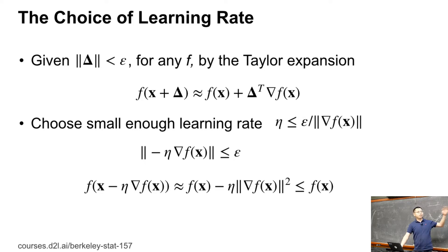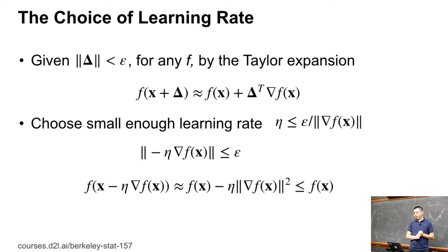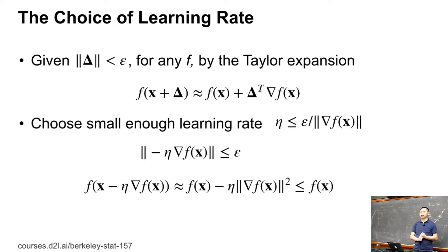Under the condition of epsilon, we can choose a small enough learning rate delta less than epsilon divided by the norm of the gradient. Then we know that the learning rate times the gradient is less than epsilon. The new updated value x minus learning-rate times gradient satisfies f(x - η∇f) ≈ f(x) minus delta times the norm of the gradient, which is less than f(x). If the gradient is not zero, we are making progress. If we choose small enough eta, but if we're already at a local minimum, we cannot make any progress. That is the basic idea of how we choose the learning rate: small enough to guarantee decrease at every step.